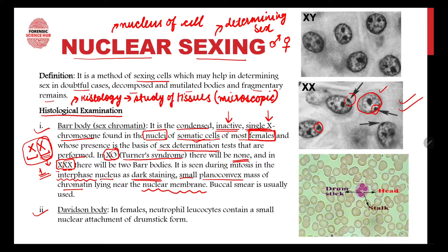Now let's talk about Davidson body. Like the Bar body, it is also found in females. It is found in leukocytes — that is, white blood cells. White blood cells are of five types: neutrophils, eosinophils, basophils, monocytes, and lymphocytes. The Davidson body is specifically seen in neutrophil leukocytes.